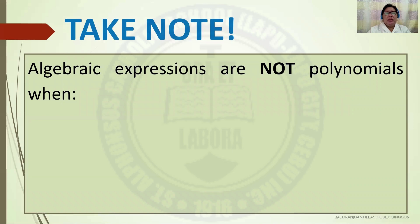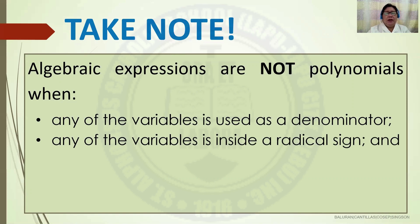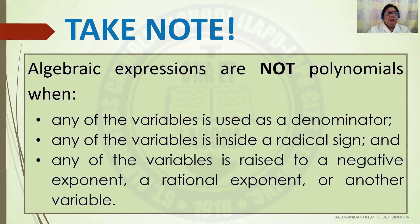Take note: algebraic expressions are not polynomials when any of the variables is used as a denominator, any of the variables is inside a radical sign, or any of the variables is raised to a negative exponent, a rational exponent, or another variable.